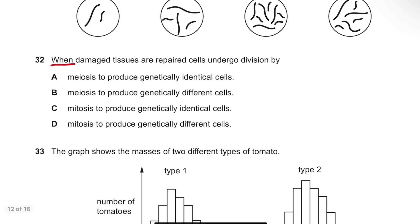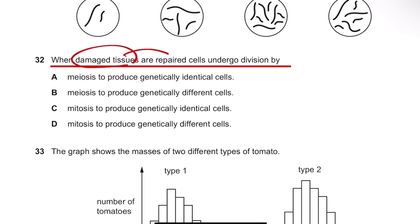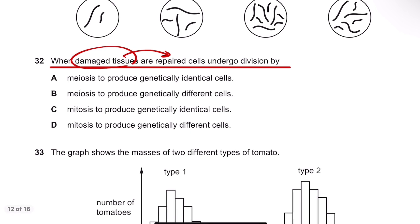Number 32. When damaged tissues are repaired, cells undergo division by... So it's asking about the type of cell division that happens when damaged tissues are to be repaired. The typical cell division that does tissue repairing is of course mitosis. This is because mitosis produces two identical daughter cells, forming clones by replacing or repairing the cells.